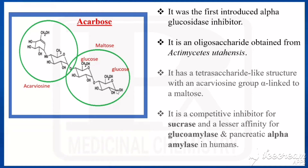Acarbose has two parts: one is called the maltose end and the other is called the acarbose end. It has a tetrasaccharide-like structure with an acarbose end and maltose end connected by an ether linkage with alpha configuration.